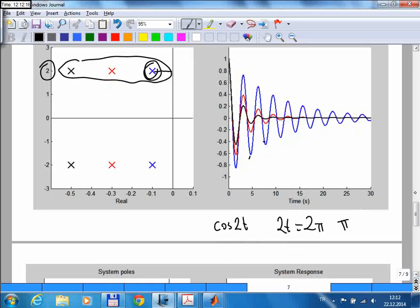So that seems about right. The period should be around pi, which seems to be pretty close, about 3 point something.